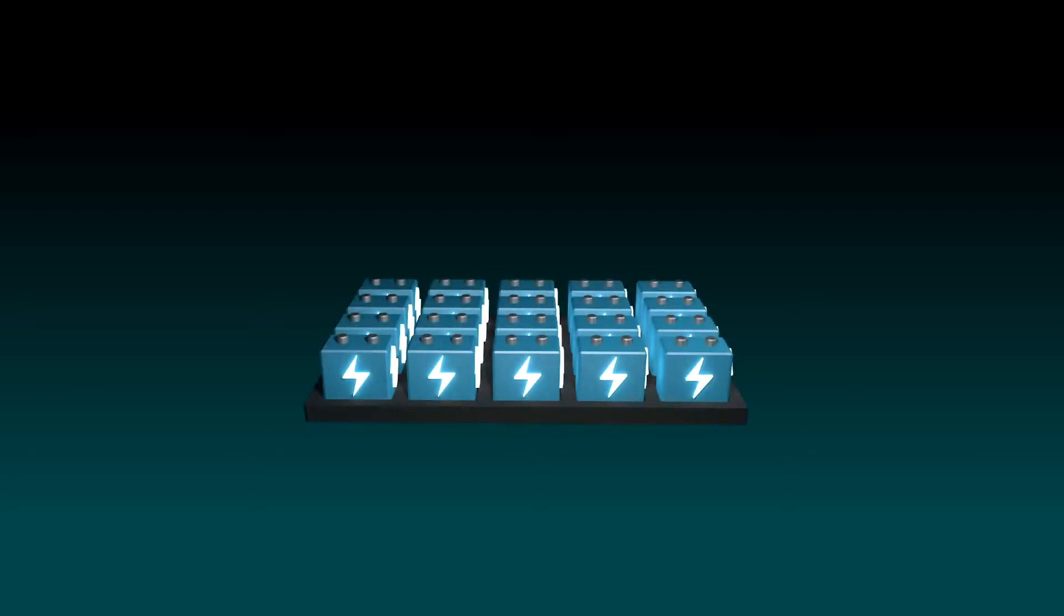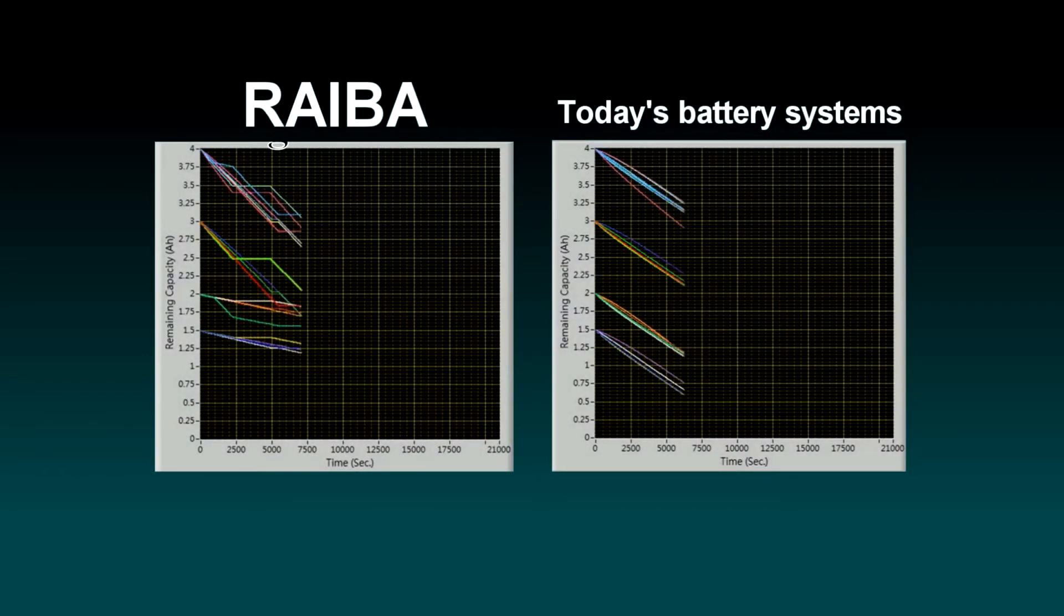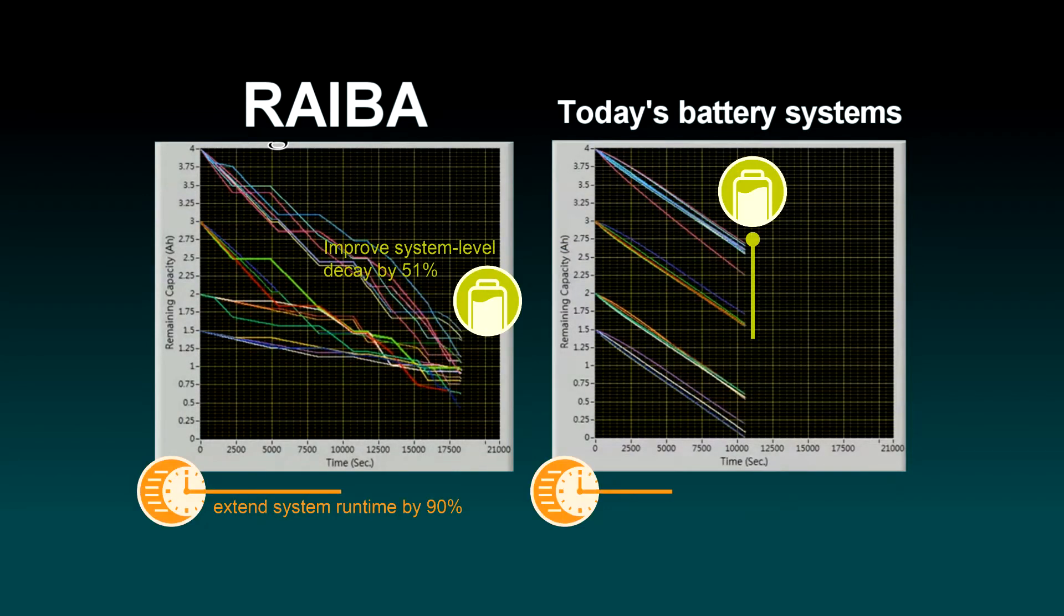Based on lab test data, for a set of 20 battery modules with capacity ranging from 1.5 amp per hour to 4 amp per hour, the REBA system can improve system level decay by 51% and extend system runtime by 90%.